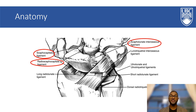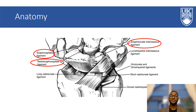One study suggests that roughly 34 percent of patients with a scaphoid fracture have an associated carpal ligament injury. Carpal instability is defined as an injury in which there is a loss of normal alignment of the carpal bones and/or the radiolunar joint.